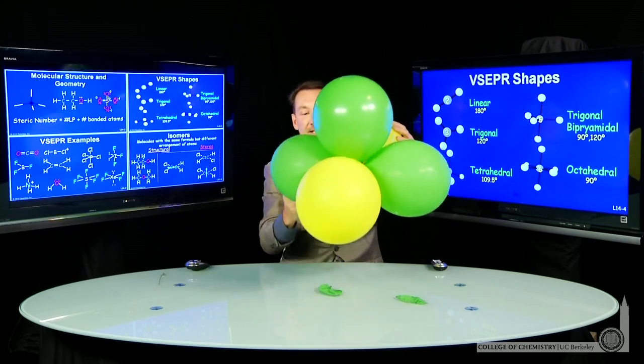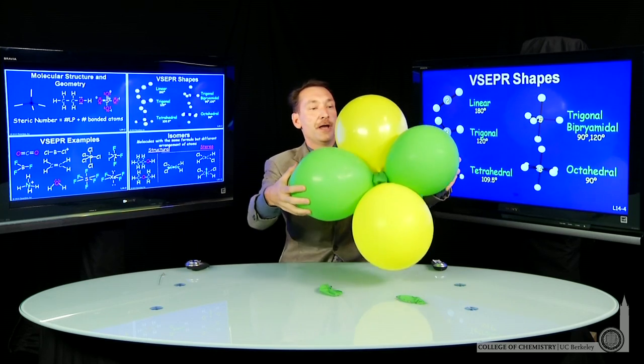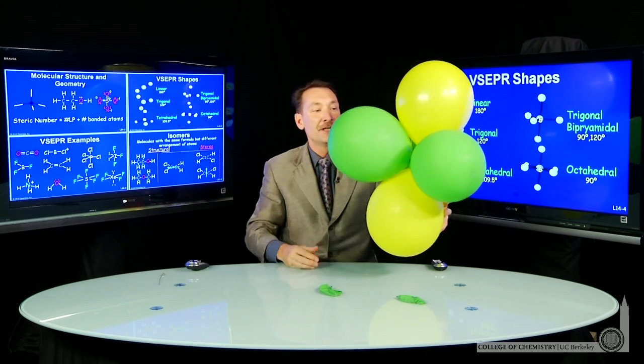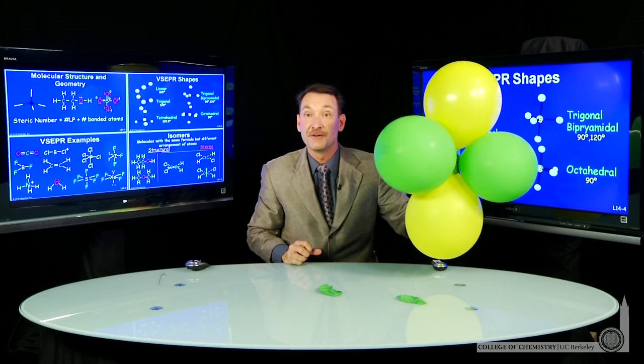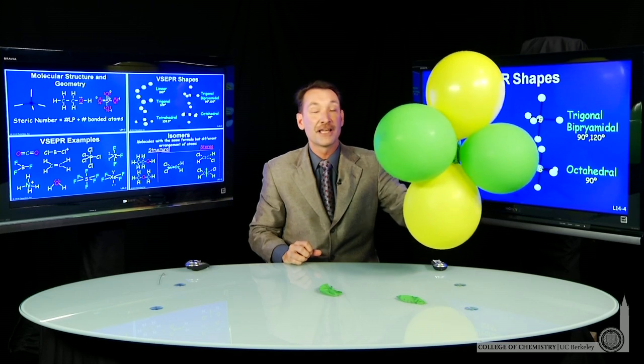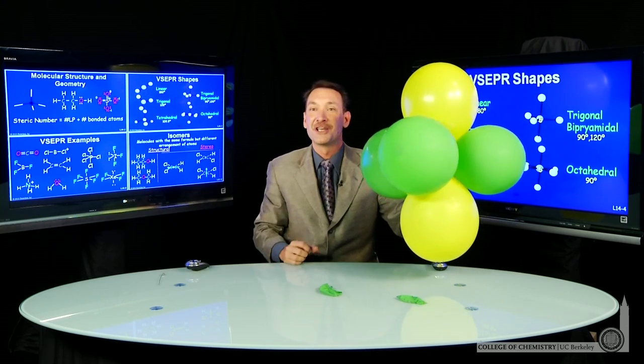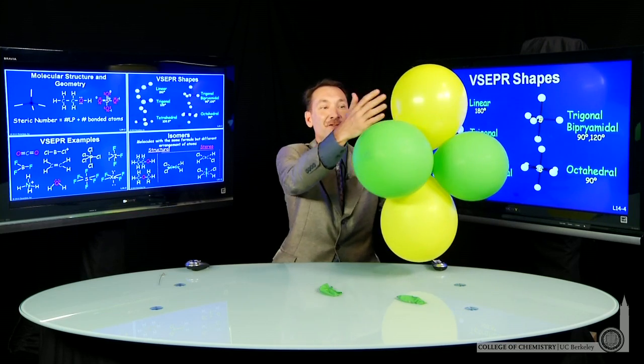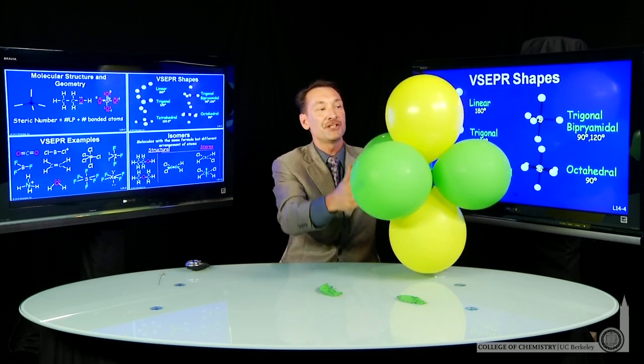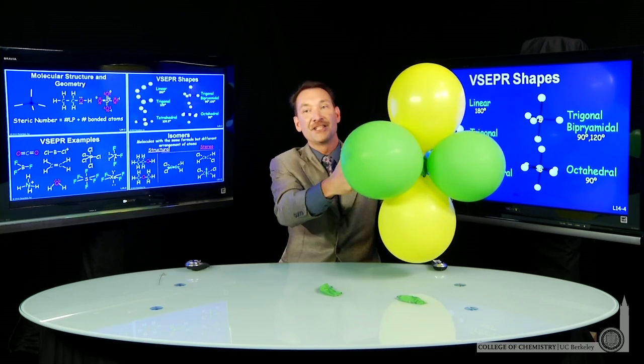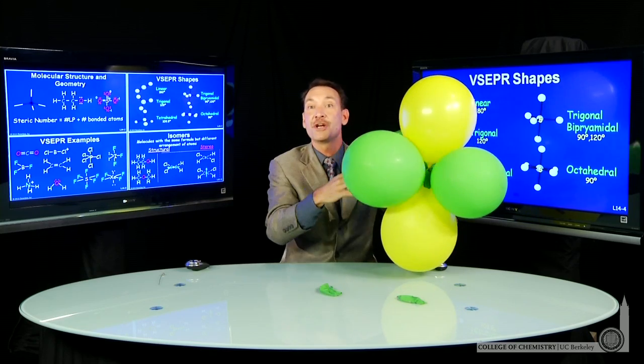Five things in space. Now I'm glad I have yellow and green balloons because when five things arrange themselves in space, and you saw I gave it a little jiggly vibrational energy to help them arrange themselves in space, now I have two different positions. I have positions that we call axial and positions that we call equatorial.